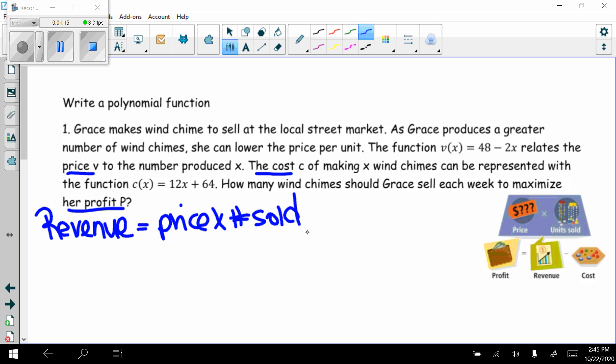I'm going to write my equation for revenue. R(x) equals the price, they gave me that equation, 48 - 2x, times what is sold, which they told me was x. So I multiply that and I get 48x - 2x².